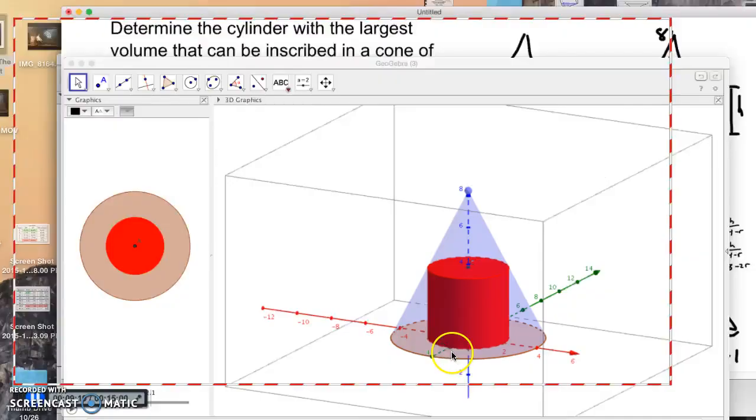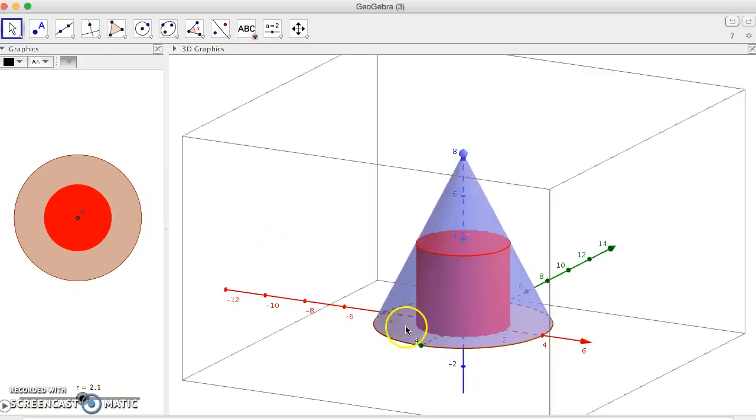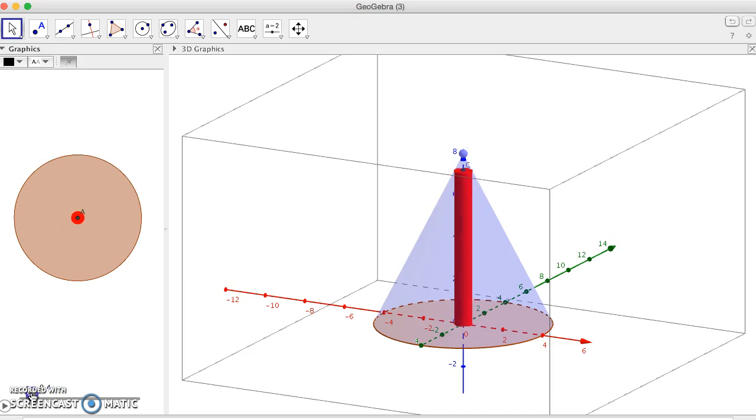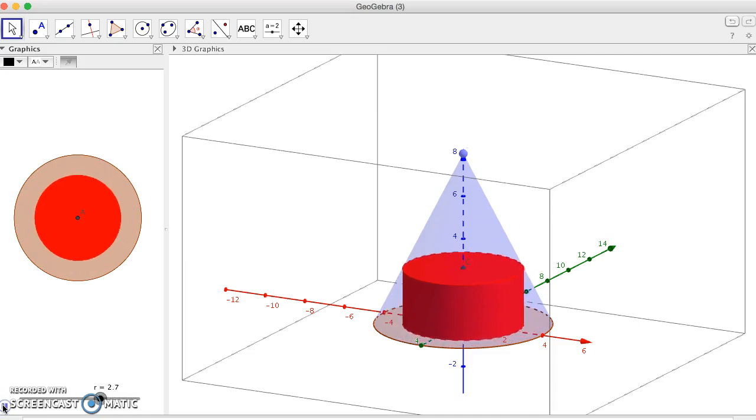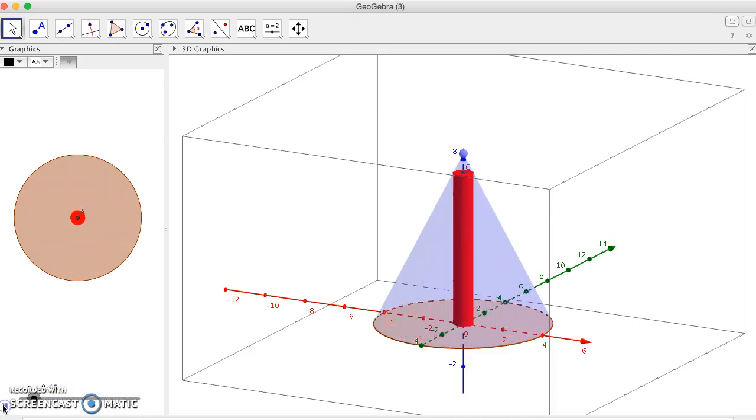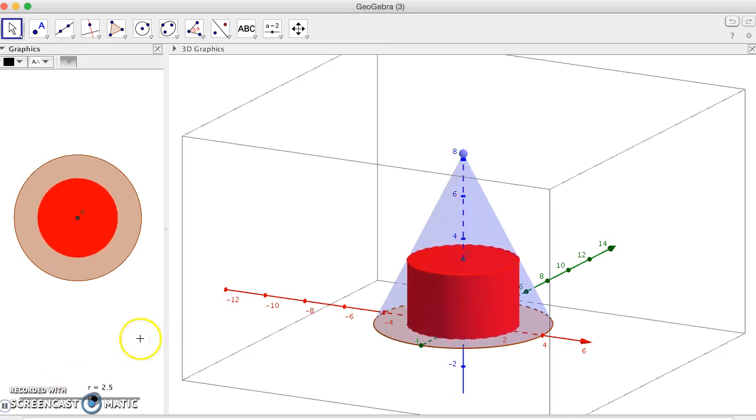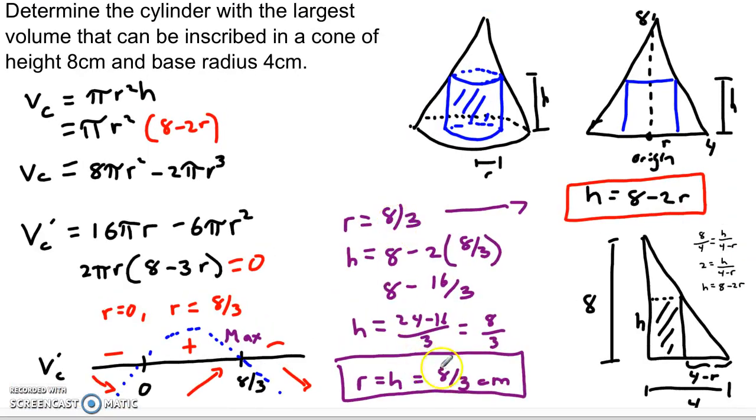And I've also got a little animation here for you on this one. So here you can see our cone, right? It has a height of eight, radius of four, and inside of our cone is a cylinder. And clearly some of these cylinders are going to be less efficient than others. Like this is a real tall, skinny cylinder. It's not going to do us very much good. We could also have a really short fat cylinder. Not going to do us much good. Somewhere in the middle is going to be the cylinder that we're looking for.